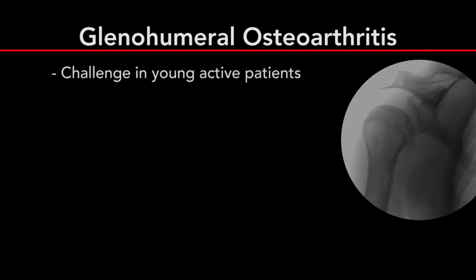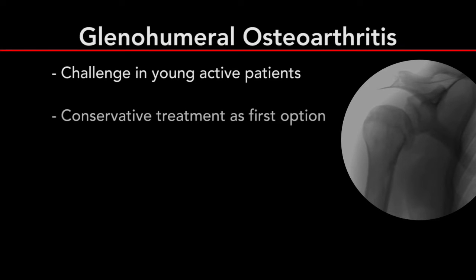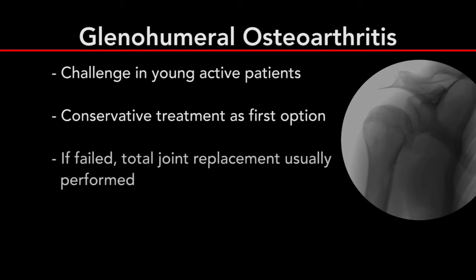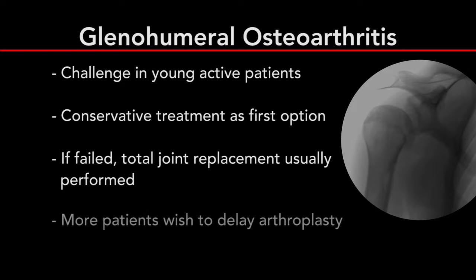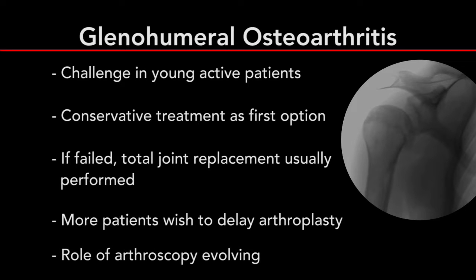Severe osteoarthritis of the shoulder is clinically challenging to manage. After failed conservative treatment, total shoulder arthroplasty is usually performed. However, with patients wishing to avoid or delay arthroplasty, the role of arthroscopy for managing arthritis is evolving.